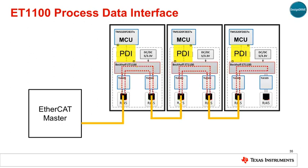This animation shows the movement of data, starting as EtherCAT datagrams sent from the master to each slave in turn. As the data passes through an ESC, new control or output information is sent to the MCU, and new sensor or input information from the MCU is dropped into the passing datagram. In this example, the PDI is exchanging information between the ESC and a C2000 Delfino F2837X MCU.